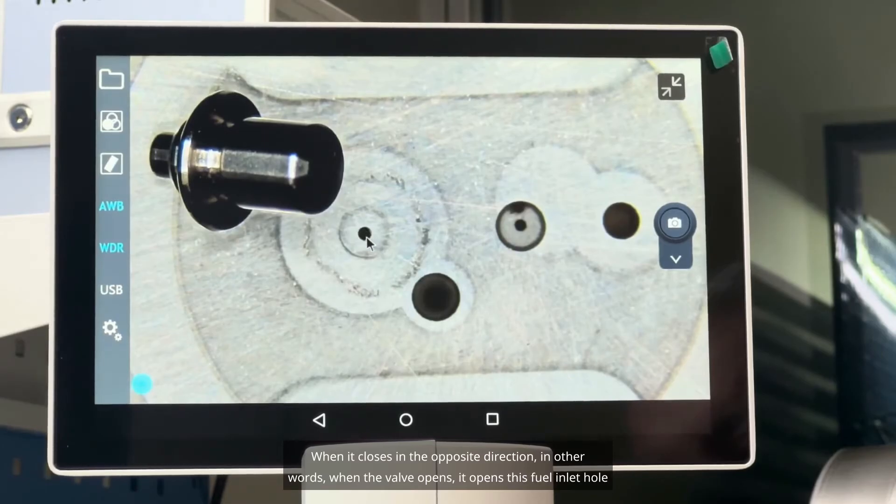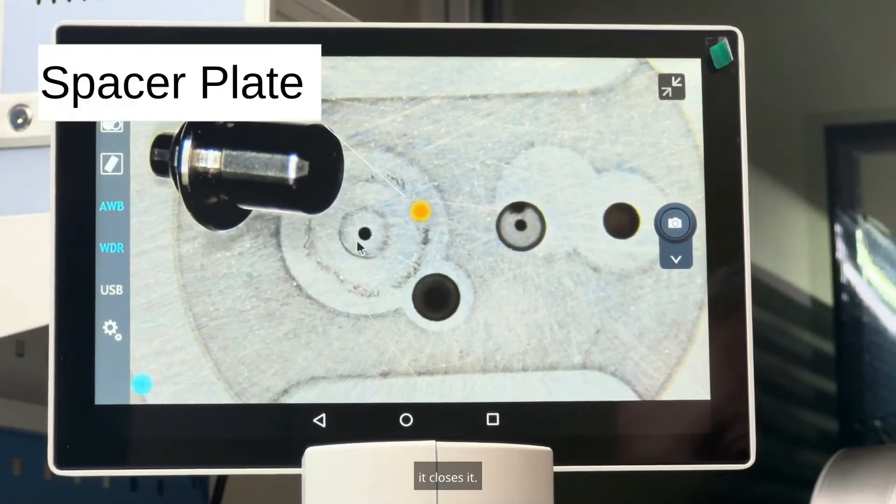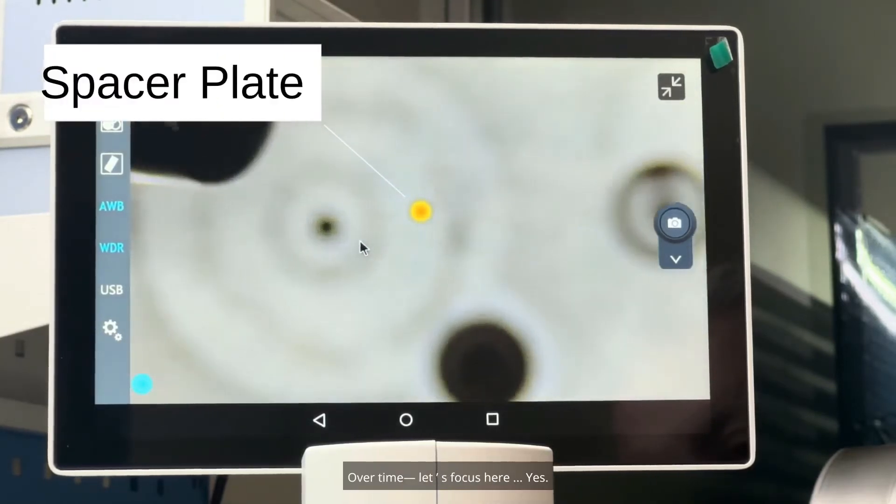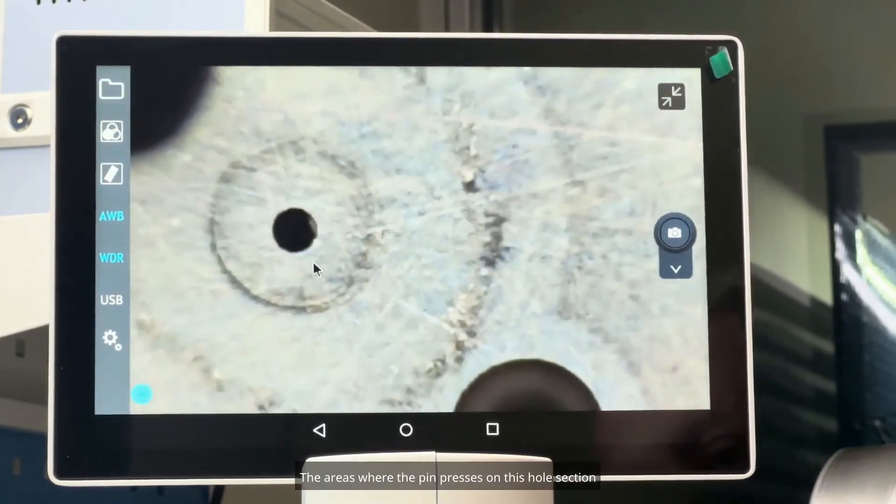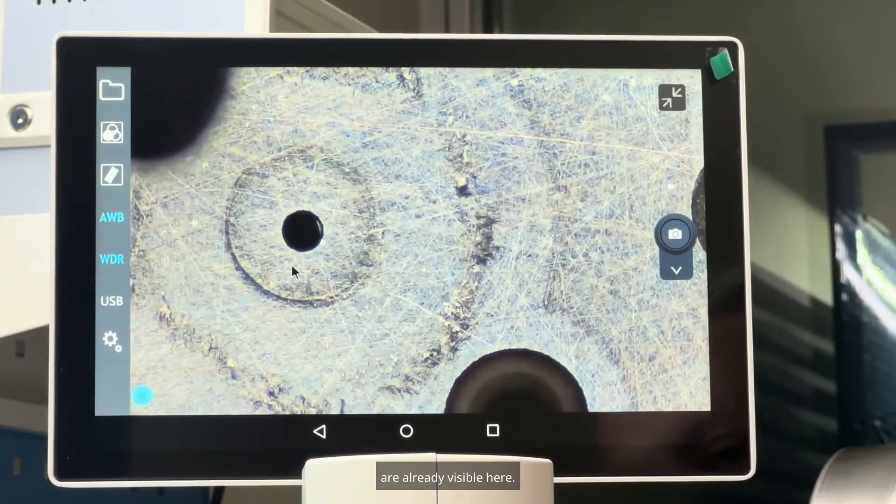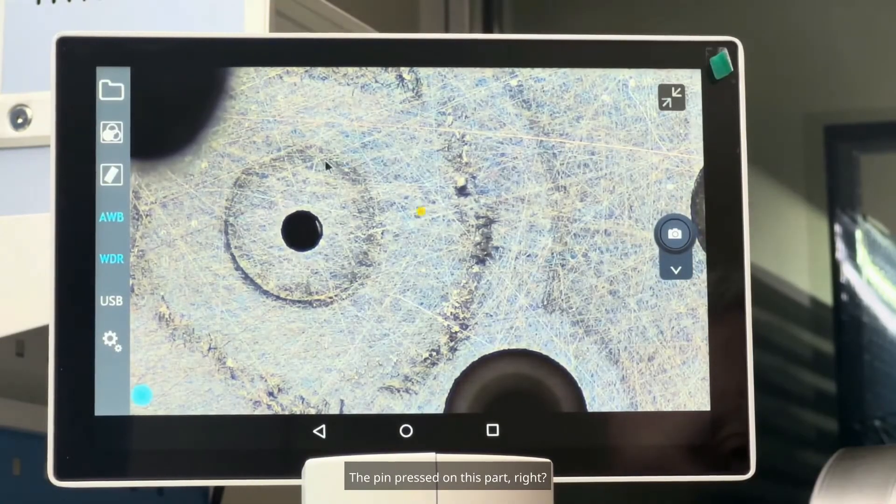When it closes in the opposite direction, in other words, when the valve opens, it opens this fuel inlet hole here. It closes it. Over time, let's focus here. The areas where the pin presses on this whole section are already visible here. The pin pressed on this part.